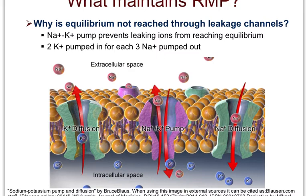To summarize the two questions addressed in this video: first, what creates the resting membrane potential? We have many more leakage channels for potassium than for sodium, so we end up with a more negative inside compared to the outside of the cell membrane. Second, how do we make sure we don't disturb the concentration gradients too much by losing or gaining positive ions in the form of potassium and sodium? That's where the sodium-potassium pump comes in — it fixes and maintains the ion concentration gradients for sodium and potassium.